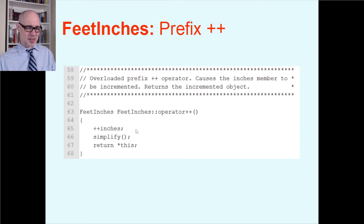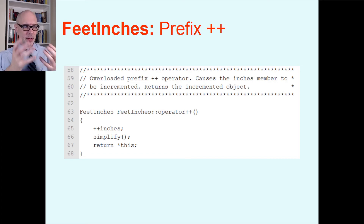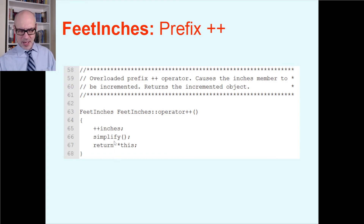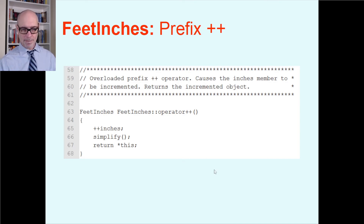Beginning students sometimes want to increment every member including feet, but that doesn't make sense — you wouldn't want to take a two foot six measurement, do plus-plus, and get three foot seven. The point of increment is to add the smallest possible unit, which here is just one inch. The simplify private member function handles the carry automatically if inches goes over 12. That's all prefix notation needs — modify first, then return.